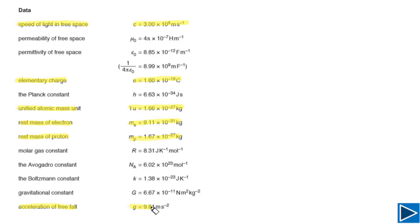It is also important to remember the acceleration of free fall. In your calculations, use g = 9.81 m/s², not 10. These constants — six in total — are what you need for AS Physics. It's better to remember them, but if you can't, simply come back to the second page to find the values.